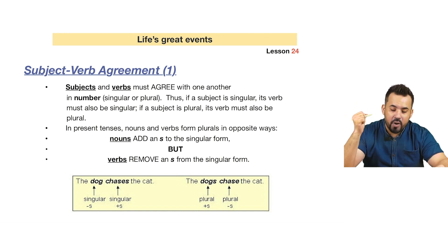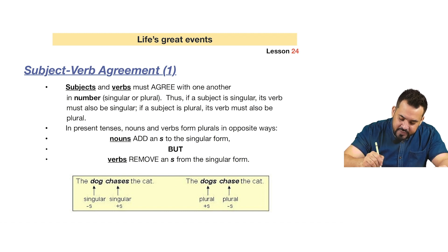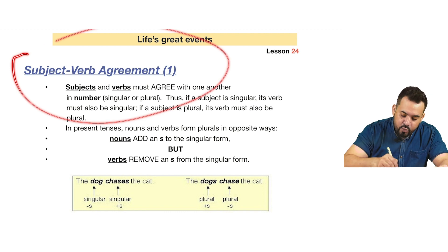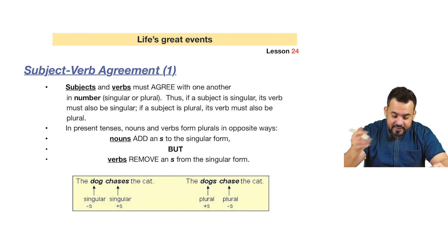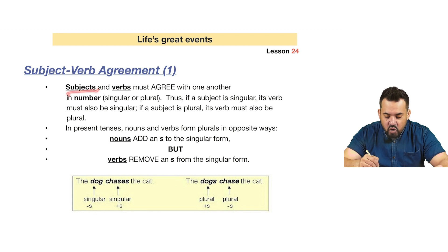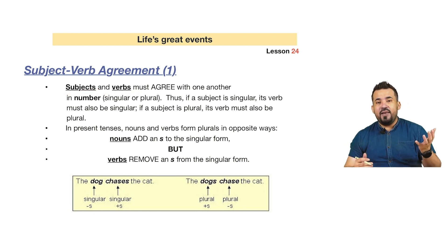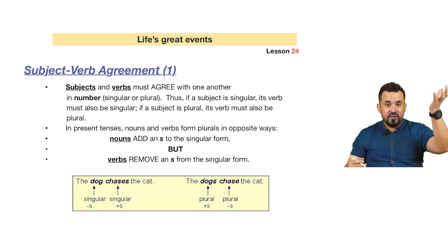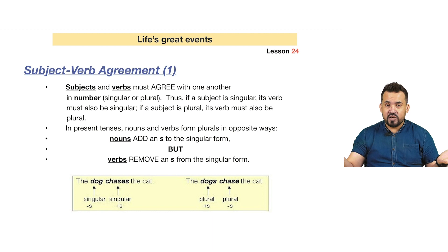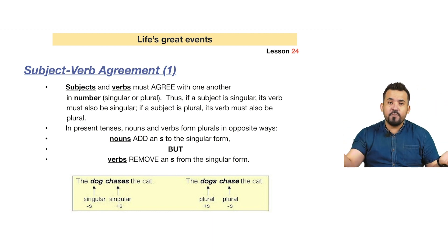Subject-verb agreement is extremely important in English, especially when you are writing. The subject must always agree with the verb — we must always use the correct verb with the correct subject. If the subject is singular, the verb must agree with it. If the subject is plural, the verb must agree with it.